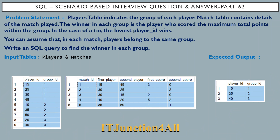Now let's come back to the problem statement. For this problem, we have two tables. The first table is the player table and the second one is the matches table. The player table indicates the group of each player.